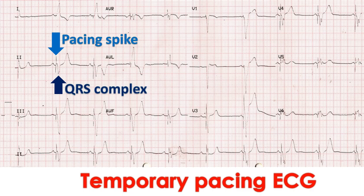Here is an ECG of a person who has been given temporary pacing. The narrow spikes prior to each QRS complex are the pacing spikes, the electrical signal delivered by the pacemaker. The QRS complex represents the electrical activity of the lower chambers of the heart, which occurs as a result of pacing. This electrical activity causes the heart muscle to contract and pump blood.